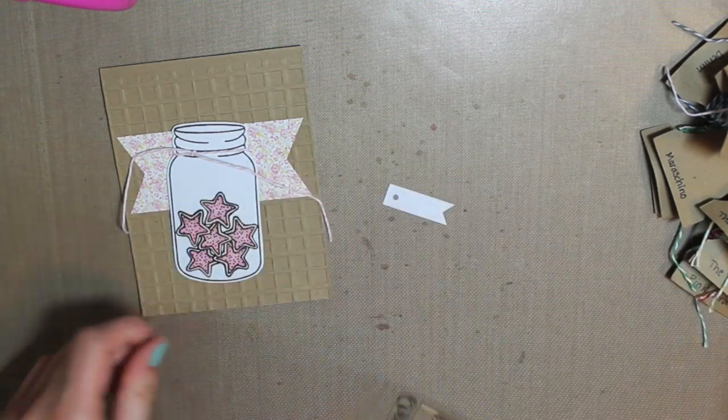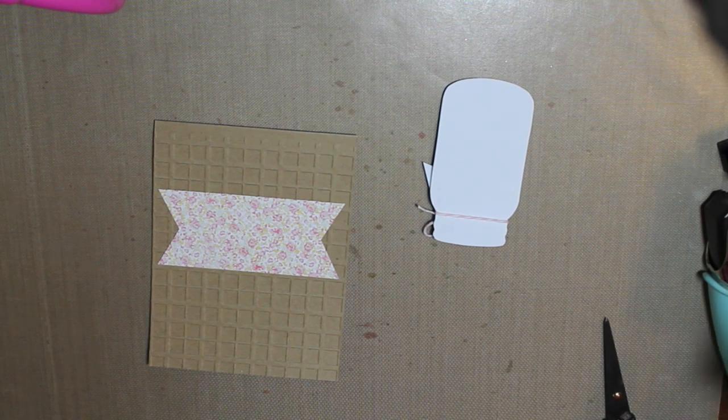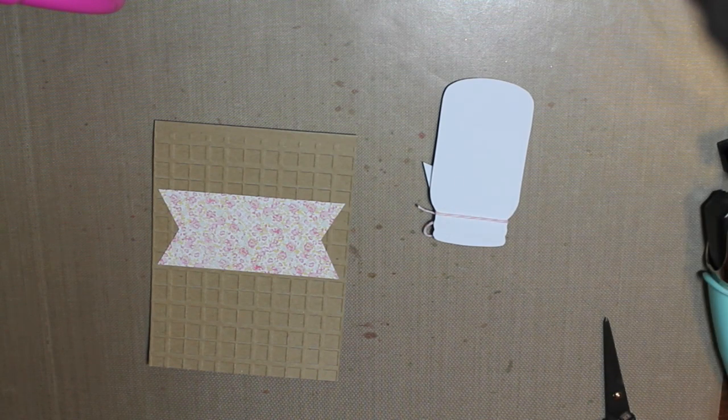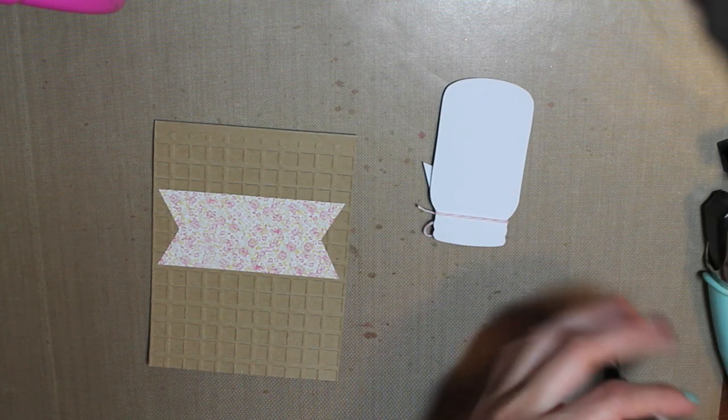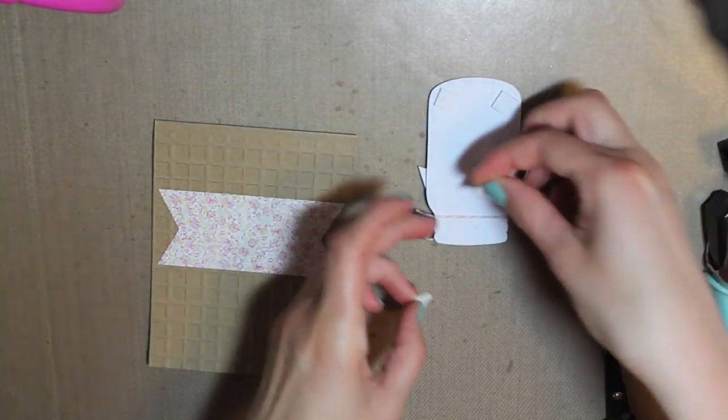I'm going to use the spotted stamp set to stamp the hi image. And my camera stopped recording at that point. But I just cut a little fishtail banner from a piece of white cardstock. And then stamp my sentiment on there with Tuxedo Black Memento ink.